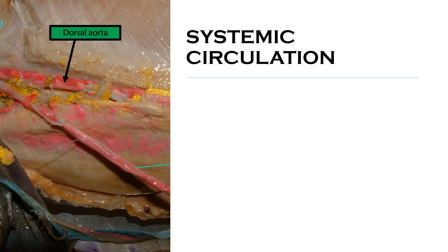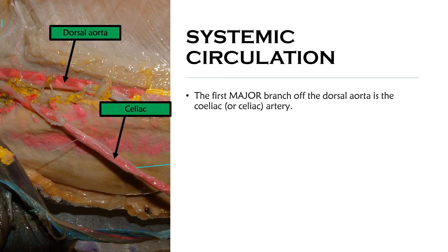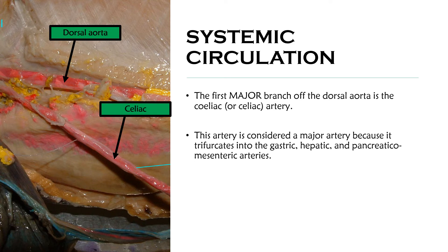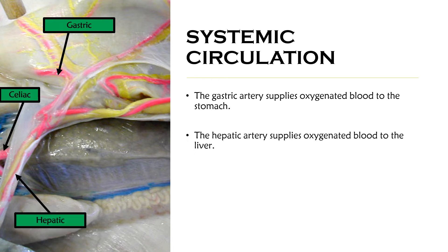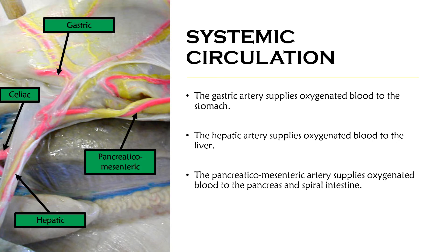Moving down the dorsal aorta, the first major branch is the celiac artery. The celiac artery is considered a major branch because it trifurcates into the gastric, hepatic, and pancreaticomesentric arteries. The gastric artery supplies oxygenated blood to the stomach — gastric meaning of or associated with the stomach. The hepatic artery supplies oxygenated blood to the liver — hepatic meaning of or associated with the liver.